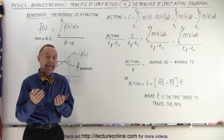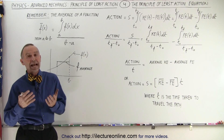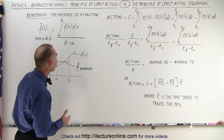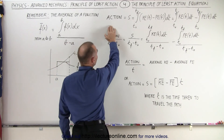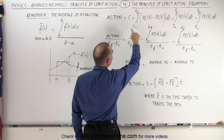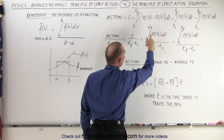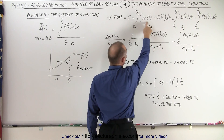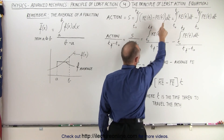Remember, the path taken by the particle will be such that the action will be a minimum. But what does that really mean? Let's go back to the equation where the action, represented by the variable S, is equal to the integral over the time it takes to travel the path of the kinetic energy as a function of time minus the potential energy as a function of time, times dt.